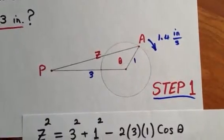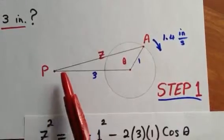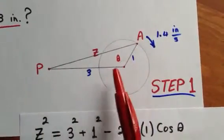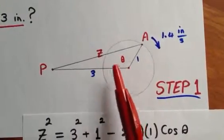In step one, we drew a good picture. We labeled the variables theta and z. Now we need to relate them.